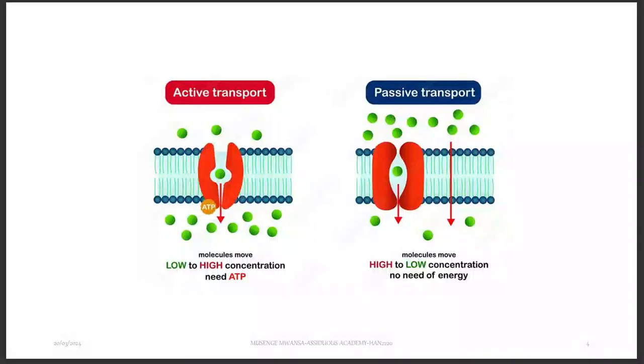When you are talking about active transport, you basically use energy in the form of ATP, meaning that you are moving molecules from a region of low concentration to a region of high concentration. Passive transport, you don't use any energy. You are moving molecules from a region of high concentration to a region of low concentration, flowing down a concentration gradient, so there is no need for energy.